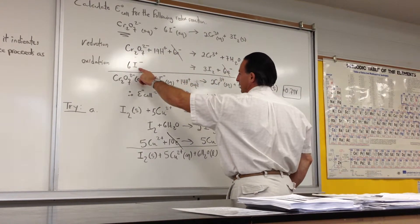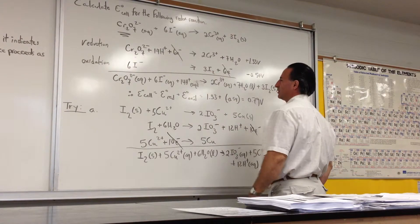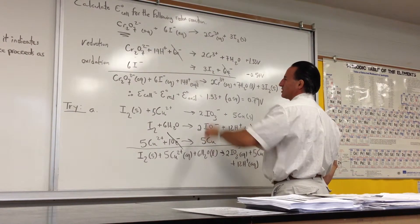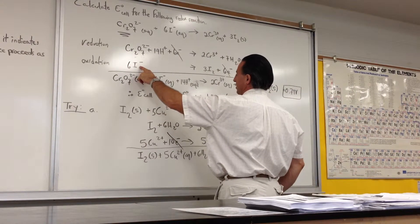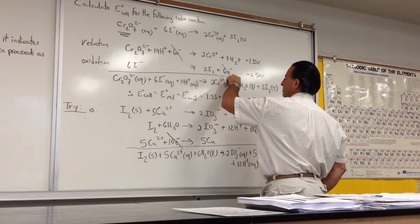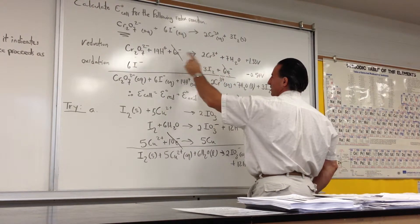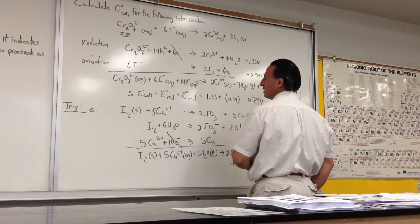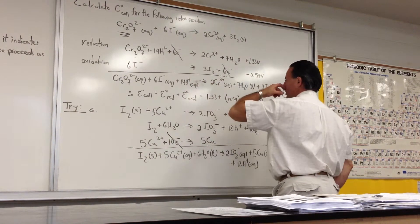To balance the iodide reaction, which is an oxidation because it goes to become elemental iodine, you just simply add six electrons because there are six extra negative charges here. There's no charge here so the balance is by putting the six electrons on that side. Then when you add these two reactions, anything that appears on opposite sides of the arrows will cancel. So the six electrons cancel.